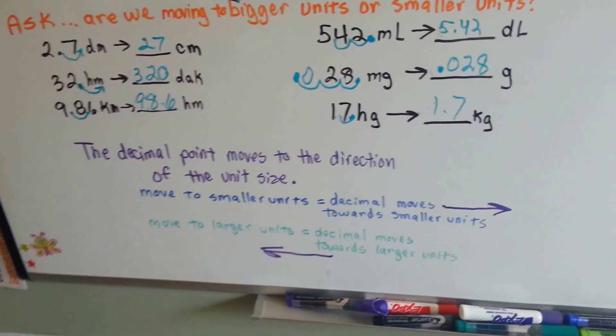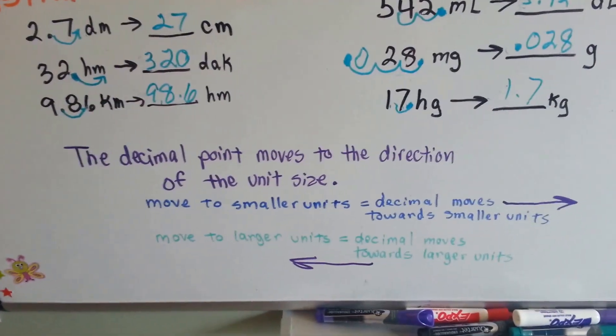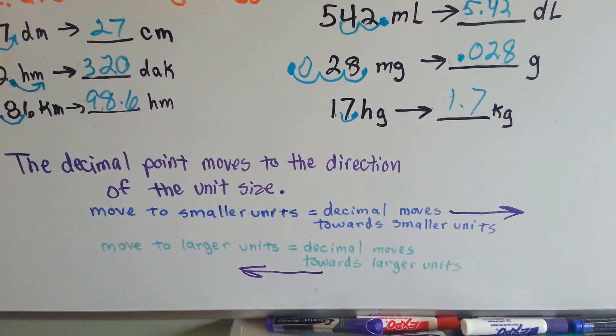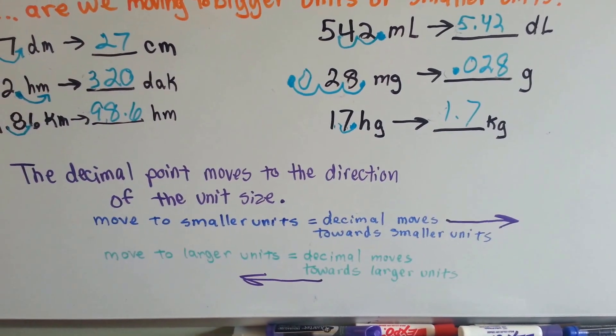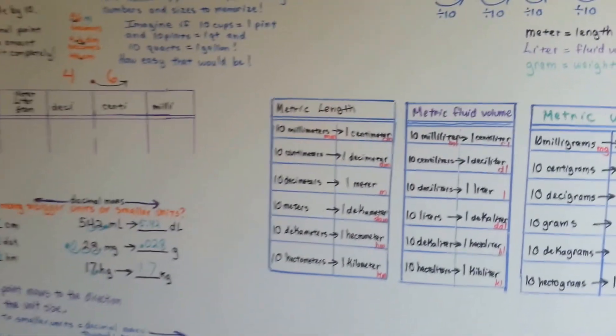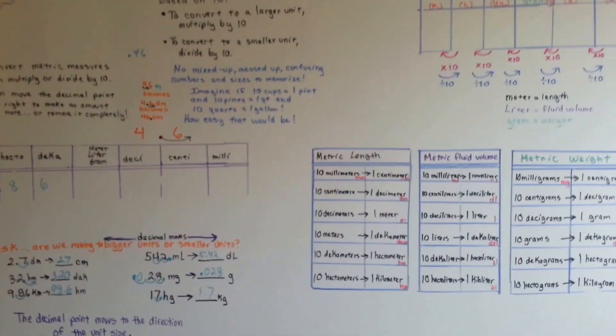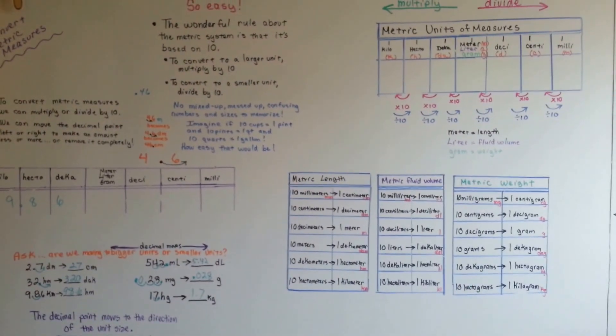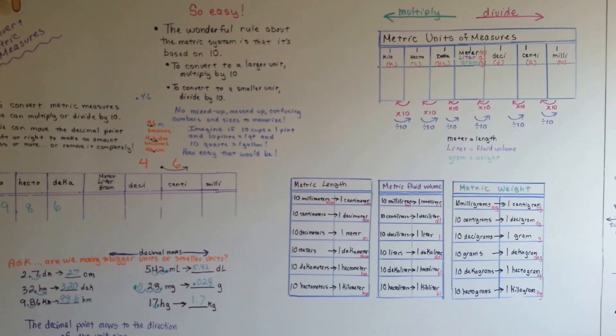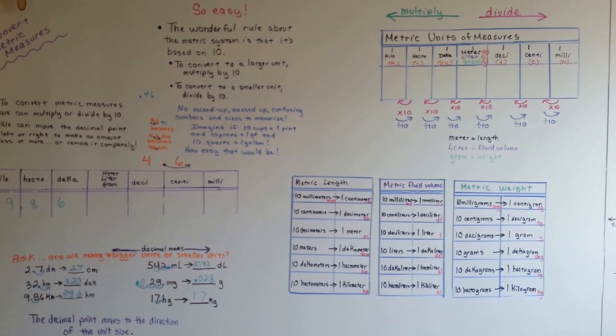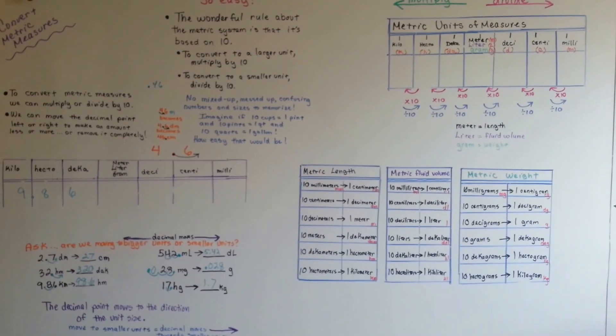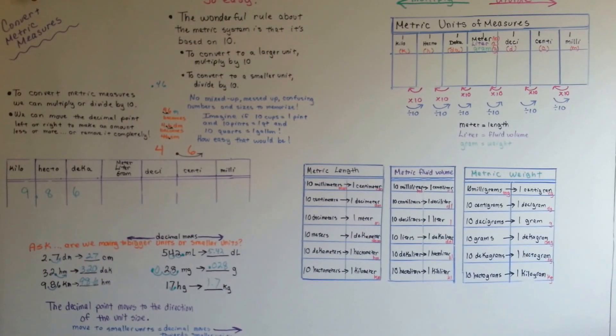So easy. The decimal point moves to the direction of the unit size. Move to smaller units equals decimal moves towards smaller units. Move to larger units, and the decimal moves towards the larger units. Isn't this easy? So easy. I think the metric system doesn't get the credit it deserves and doesn't get the love it deserves. It tries to make our life so much easier, and we keep using these US customary measures, but that's okay, because there are measures, right?